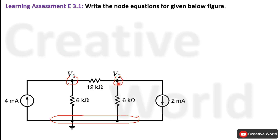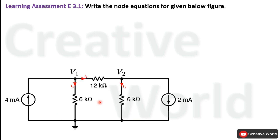In order to find node equations for these two nodes, first of all we have to label these branch currents along with their directions. Current I1 and I2 are leaving from the first node while only one current is entering: 4 mA. Similarly, at the second node, current I2 is entering while currents I3 and 2 mA are leaving.